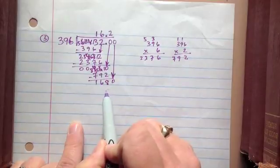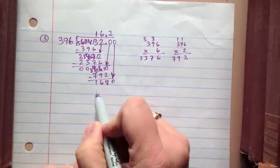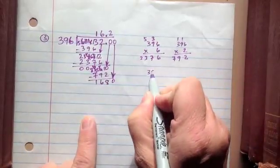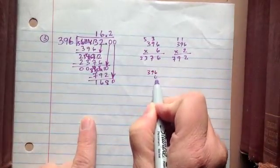I know that 4 times 400 is 1,600, so I'm going to say about 4, and let's just double check on the side here. 396 times 4.